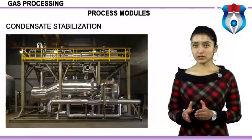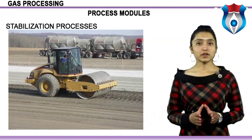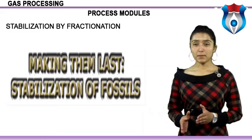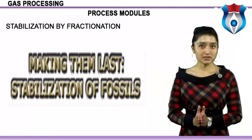Stabilization of condensate streams can be accomplished through either flash vaporization or fractionation. Stabilization by fractionation is a detailed process very popular in the industry and precise enough to produce liquids of suitable vapor pressure.